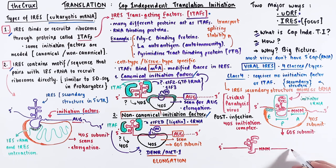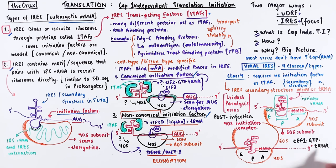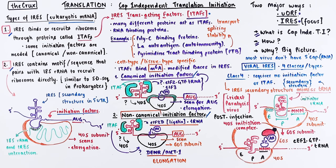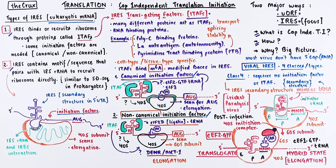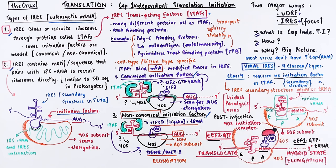When the 80S ribosome assembles, it is ready for the A site codon to be translated, which means that the new tRNA will be brought in by eukaryotic elongation factor 1, positioning itself at the A site. This is exactly the hybrid state of the 80S ribosome complex discussed in the elongation video. This ribosome is now ready for elongation factor 2, which will help in the translocation to the next codon. In this process, only elongation factors are required — no initiation factors are needed. So this form of IRES completely bypasses the need for any initiation factor.